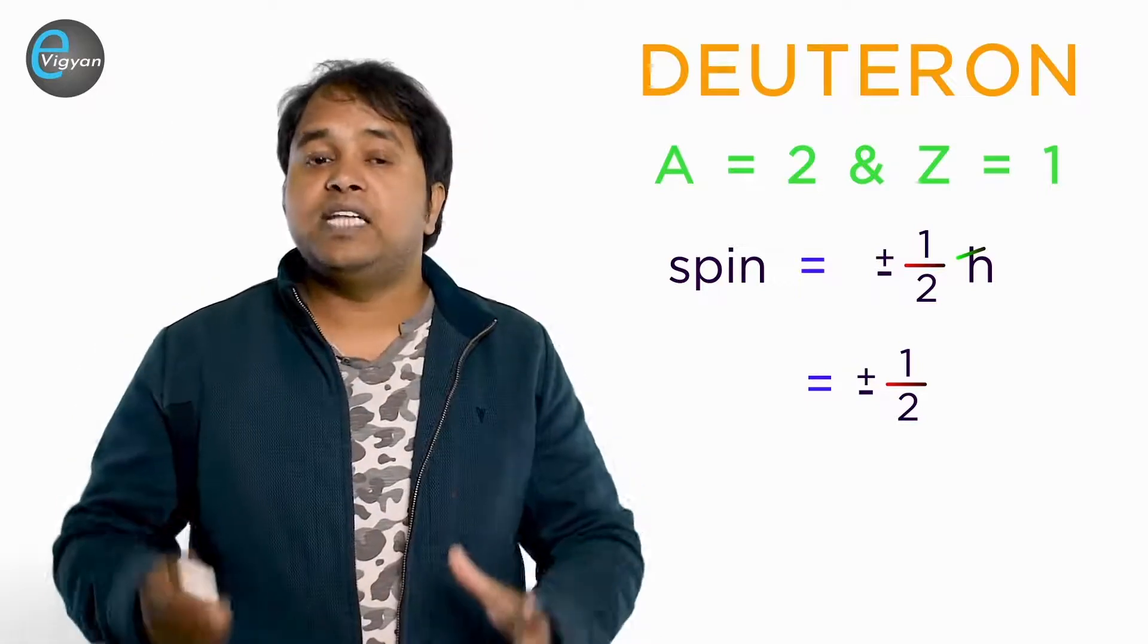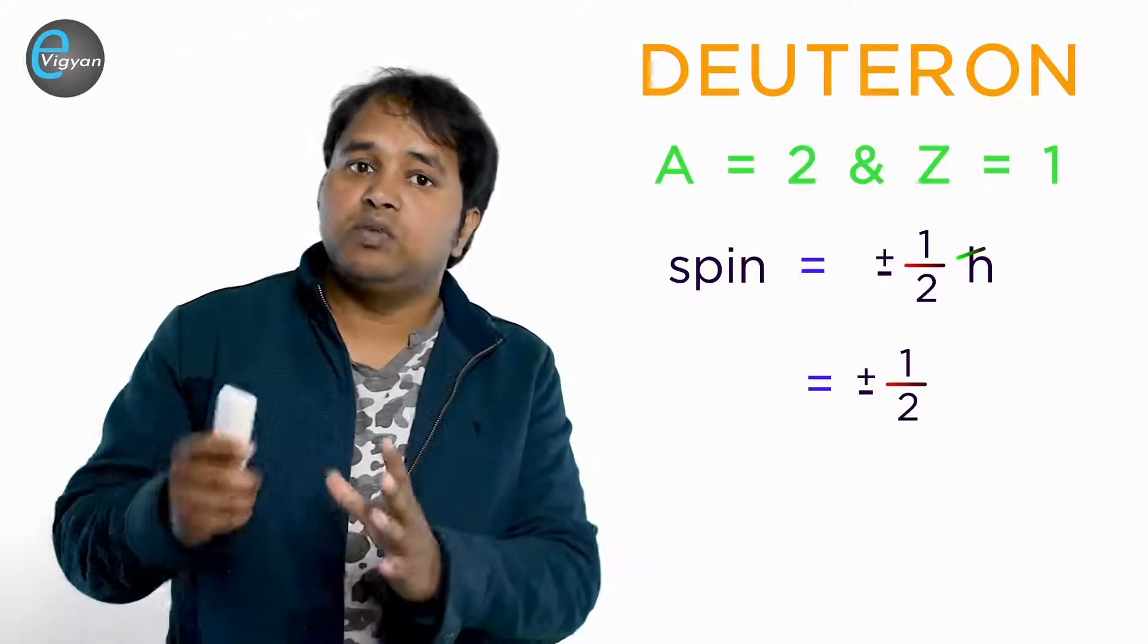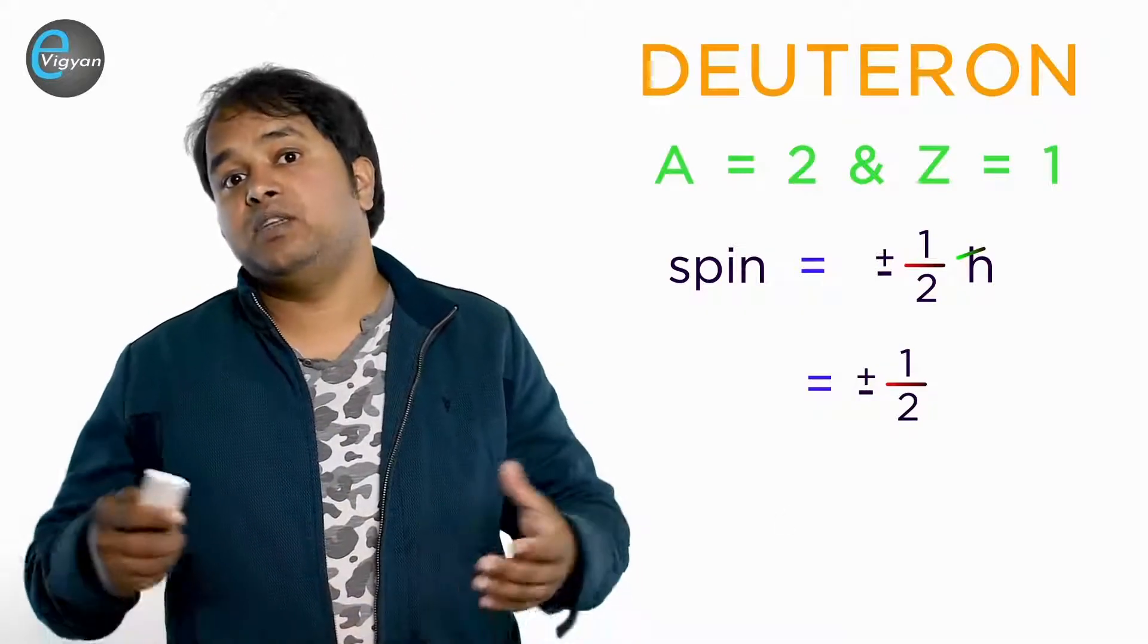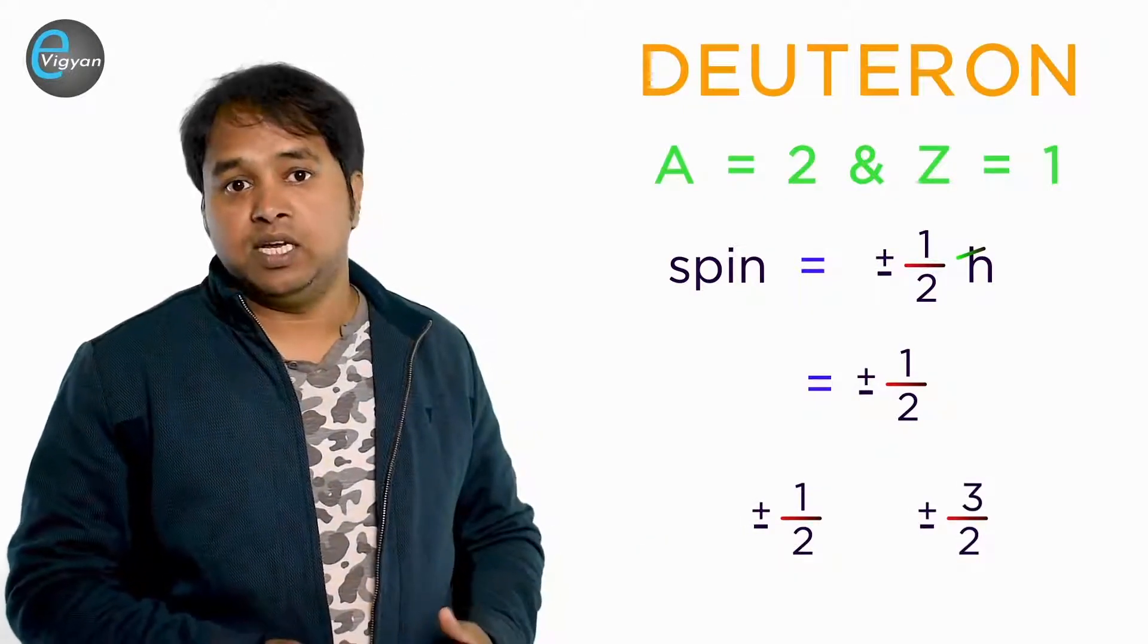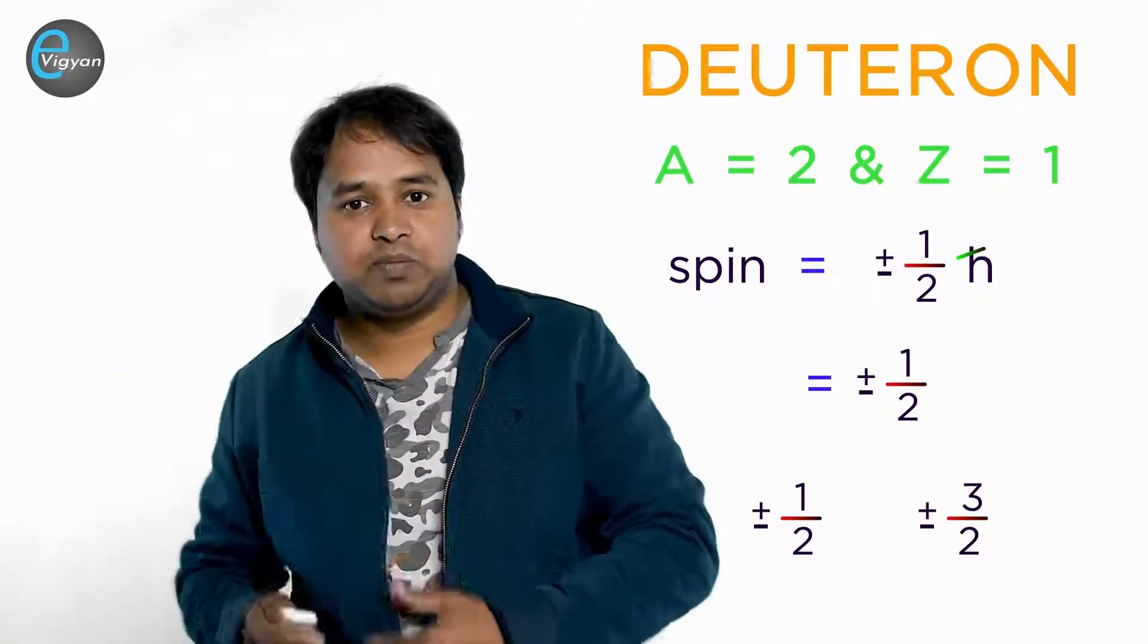When you add the spin vectors of two protons and one electron, then the possible spins of deuteron would be either ±1/2 or ±3/2. But the measured ground state spin of deuteron is calculated as plus 1.